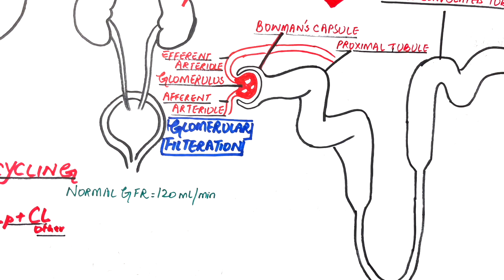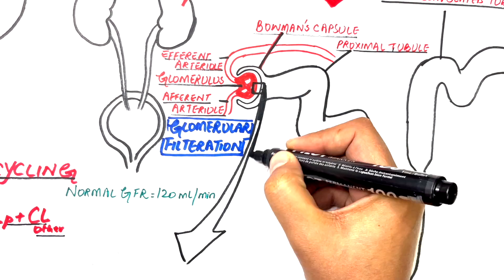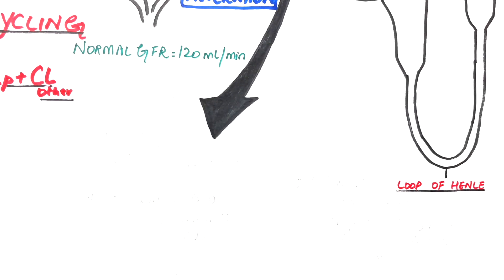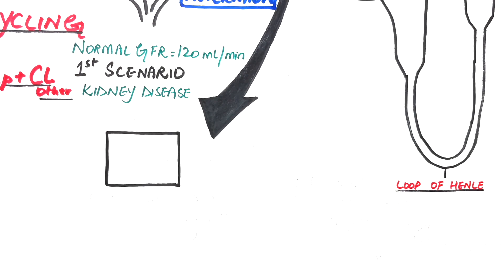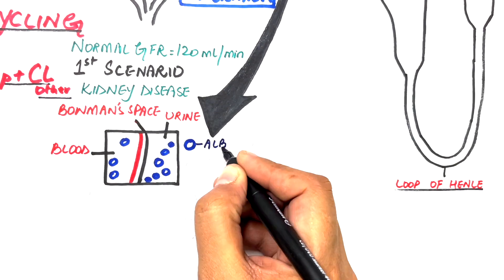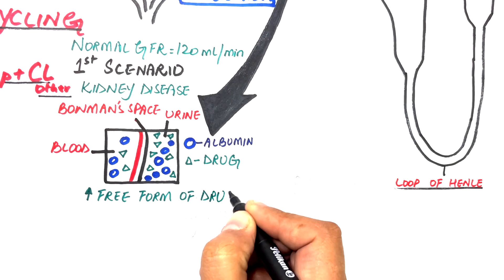To simplify this, let's take a small section of the Bowman space and look at two scenarios. In the first scenario, suppose a patient has kidney disease. In such a patient, the albumin protein will be lost into the urine, making the free form of the drug more exposed to the Bowman space. Hence, the clearance rate of the drug will be increased.